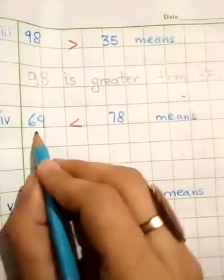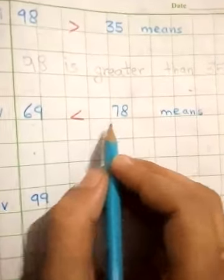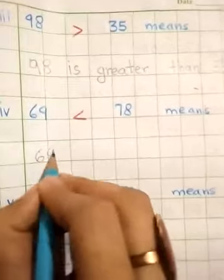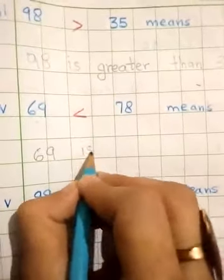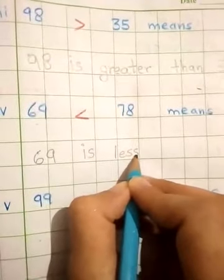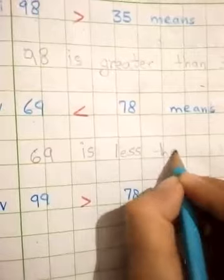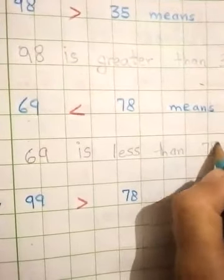Question No. 4. 69 is less than 78. 69 is less than 78.